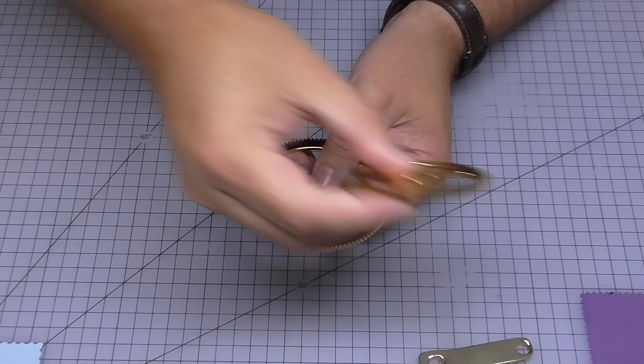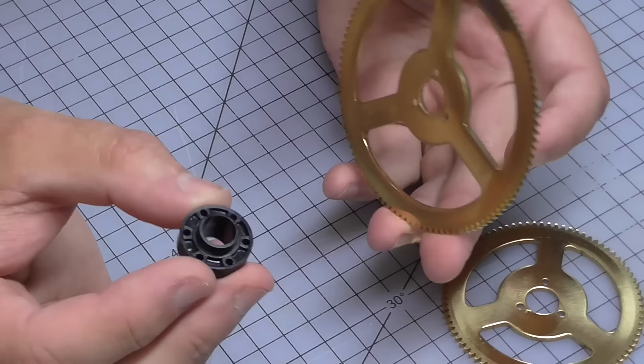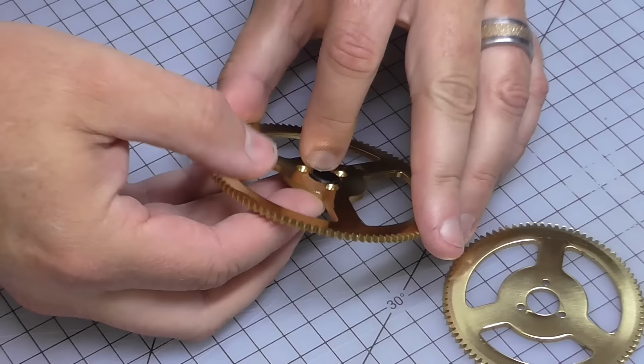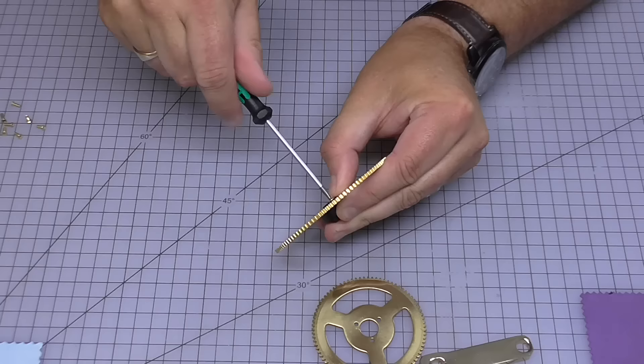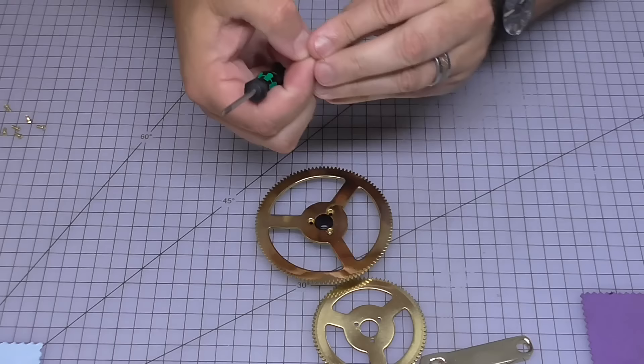So what I'm going to do first is take the grommet or the bush that's going to go between them, put that in there, line up the holes and I'm going to screw in three of these brass screws. So as soon as you've got one in it's pretty easy to line up the others.